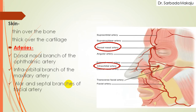Now the skin over the external part of the nose is thin over the bony part. Whereas over the cartilaginous part, the skin is thicker.